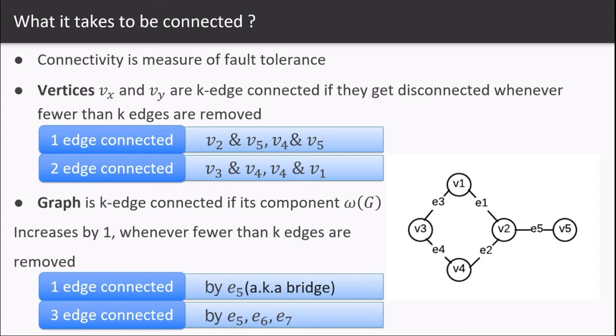If we modify the graph a little and add two more edges e6 and e7, then this graph is three edge connected by e5, e6, and e7.